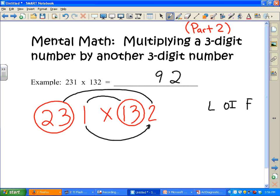The last thing we do is the first one here and the first one here. So we're going to take 23 times 13 plus our carry.